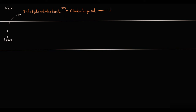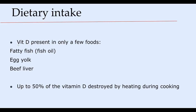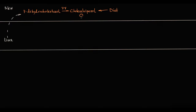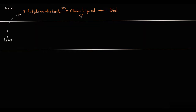Vitamin D can also be taken from diet, but the problem is that vitamin D is present in only a few foods, such as fatty fish, egg yolk, and beef liver. Also, up to 50% of vitamin D can be destroyed by heating during cooking. So dietary intake of vitamin D is low, and thereby the skin synthesis of vitamin D is the major source of vitamin D in the human organism.